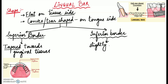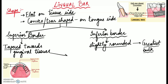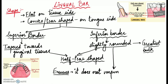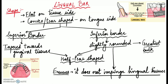The inferior border of the lingual bar should be slightly rounded, meaning the greatest bulk is present at the inferior border — this explains the half pear shape of the lingual bar, as the bulkiest portion is located inferiorly. The rounded inferior border ensures it does not impinge the lingual tissues as the denture base moves under functional occlusal loads.